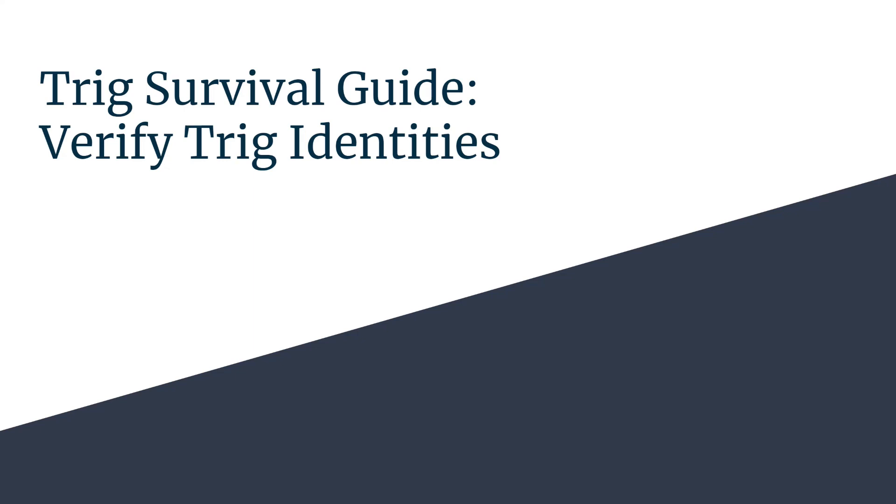Welcome to your trig survival guide. Today we're going to verify a trig identity. We're going to be looking at tangent squared x over 1 minus cosine x equals secant squared x plus secant x.